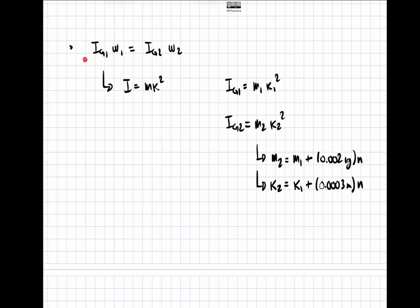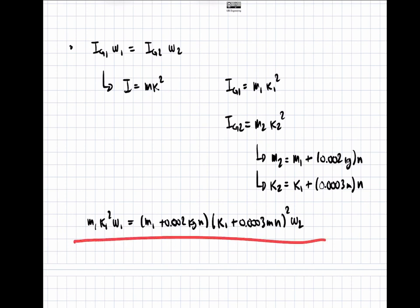So we can plug this back into the conservation of angular momentum equation and get the following equation in terms of n. m_1 times k_1 squared times omega_1 equals (m_1 plus 0.002 kilograms times n) times (k_1 plus 0.0003 meters times n) all squared times omega_2. We know all the terms in this equation except for n, and so we can solve this equation.